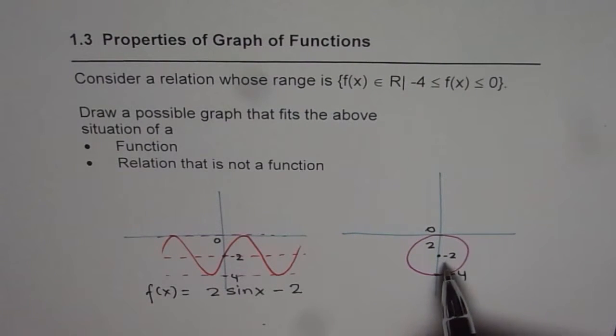So a circle whose radius is 2 units and whose center is not the origin but is at 0 and -2 is the solution.